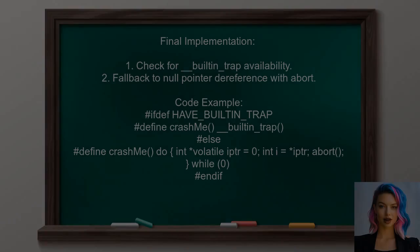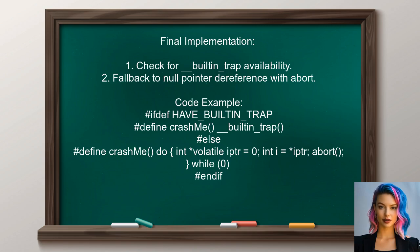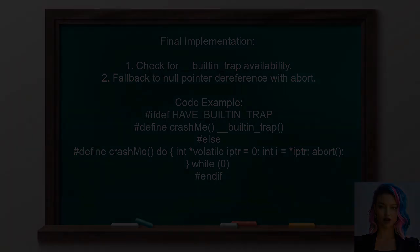The final implementation checks for the availability of __builtin_trap and falls back to a null pointer dereference with abort if it's not available. This ensures a crash occurs reliably across different compilers.